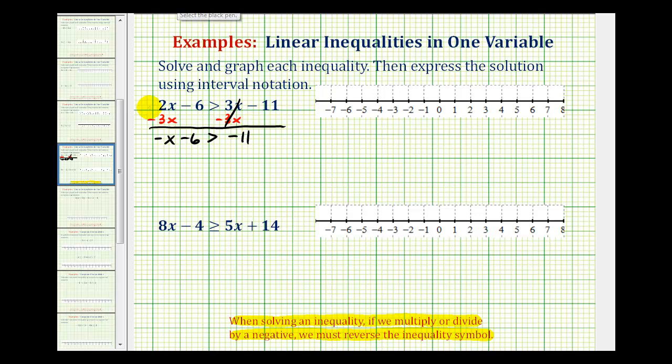And again, it might be helpful to think of this as negative 1x. So we need to undo the subtraction here, as well as the multiplication between the negative 1 and x. And we always undo the addition or subtraction first. So to undo minus 6, we'll add 6 to both sides.